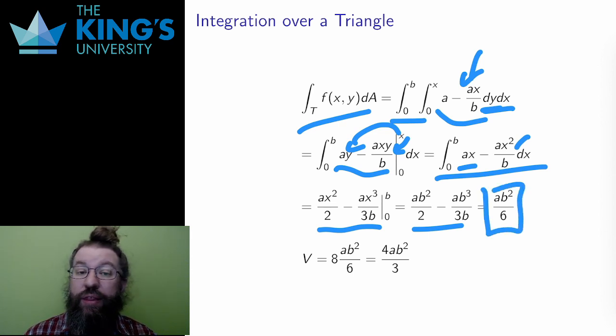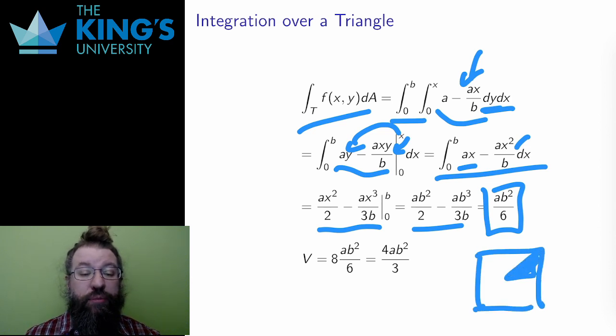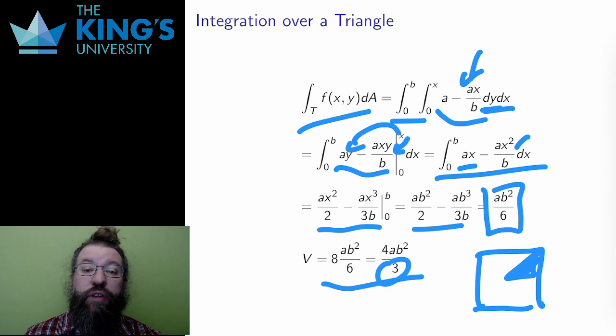Now this was one eighth of the total pyramid, so the volume of the total pyramid is 8 times this, which will give you 4ab squared over 3. Notice that a box with side lengths 2b and height a would have volume 4ab cubed. So the pyramid is one third of this volume, which is a pretty believable value.